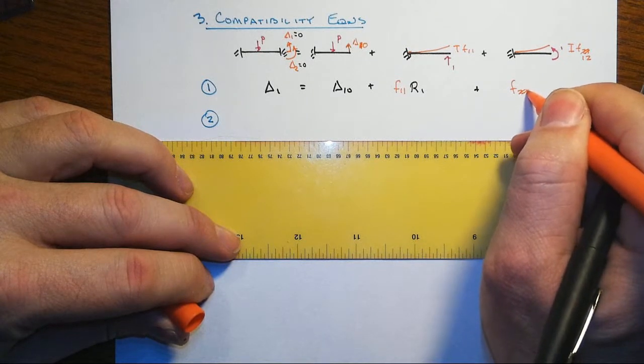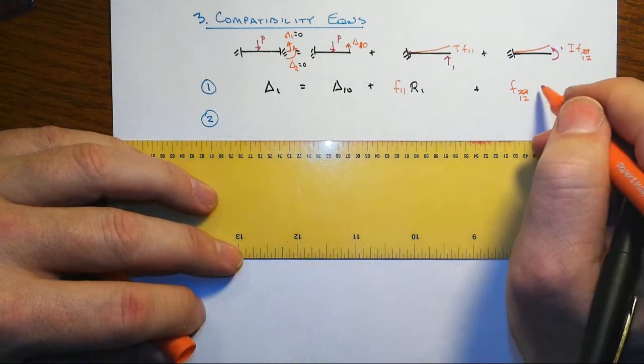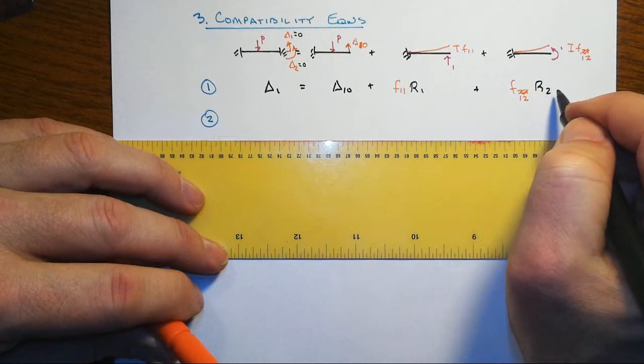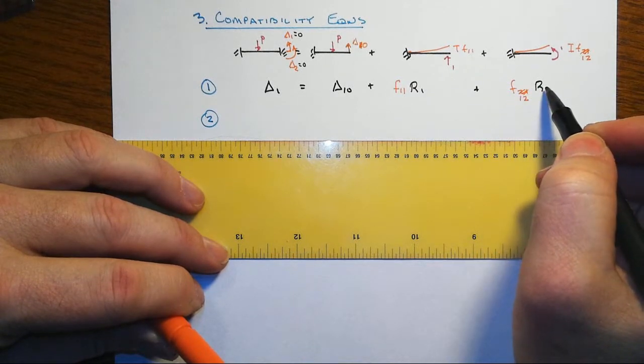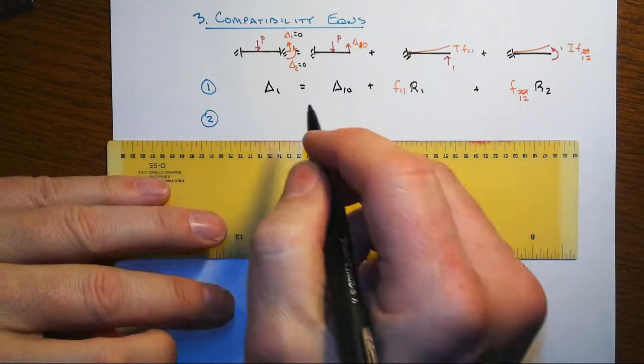It's easy to get those two swapped. First one indicates the location of the displacement, the second one what redundant reaction you're doing, so the way you always catch that mistake is because if you always write the displacement then times the reaction, then these two subscripts should be the same. So that's our first compatibility equation.